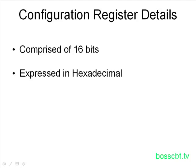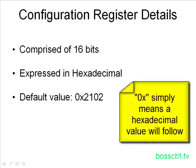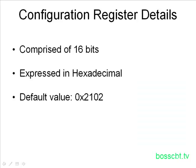There is a default value for the configuration register, and that is 0x2102. Whenever you see the '0x', that simply means the value that follows is written in hexadecimal. So if you didn't have the 0x there and you saw 2102, that looks just like any decimal number. So whenever you see 0x, think immediately that the value that follows is written in hexadecimal and not decimal.